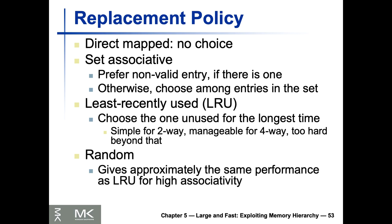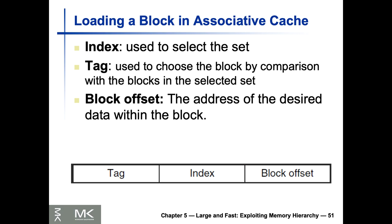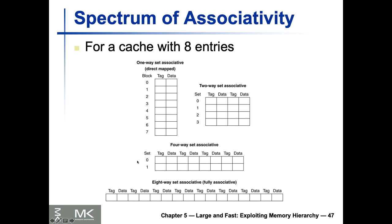Recapping the previous session on n-way caches: we have tags, index, and block offset. Depending on the block size or number of blocks we find the block offset, and depending on the cache architecture — direct map, n-way set associative (two or four-way), or fully associative — we have fewer sets and thus more tag data. That's why we call it n-way set associative: each set has n ways.